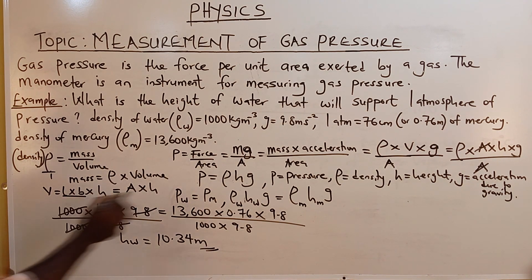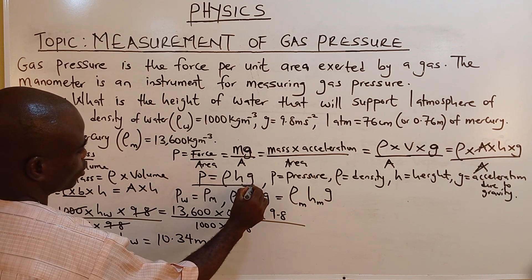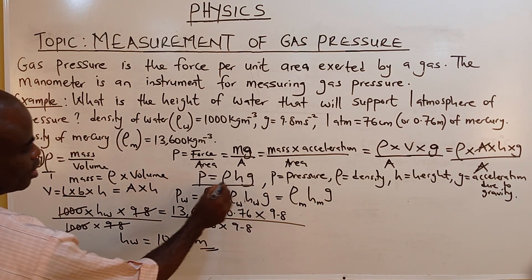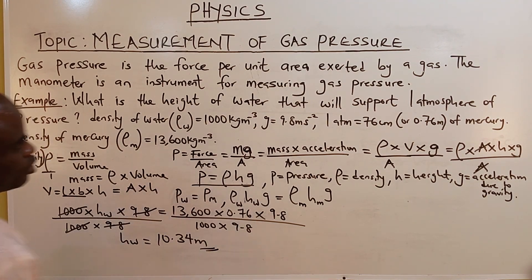We stick with the formula, pressure is force over area and pressure is rho H G. Density multiplied by height and gravity.